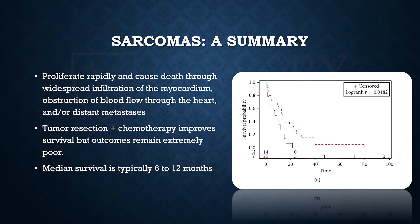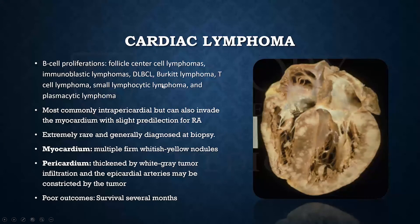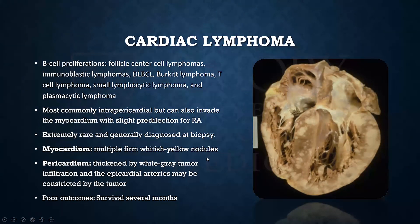In summary, sarcomas proliferate rapidly and are extraordinarily rare with poor outcomes, though survival is improved with tumor resection plus chemotherapy — shown by the Kaplan-Meier curve with treatment versus without. Cardiac lymphoma is separate from the sarcomas — these are B-cell proliferations including follicular, diffuse large B-cell, and Burkitt's lymphomas that can present within the heart. They most classically present within the pericardium but can directly invade the myocardium. When invading the myocardium, we see multiple firm, white, fleshy nodules, and in the pericardium, thickened pericardium with white tumor infiltration. Outcomes are very, very poor.